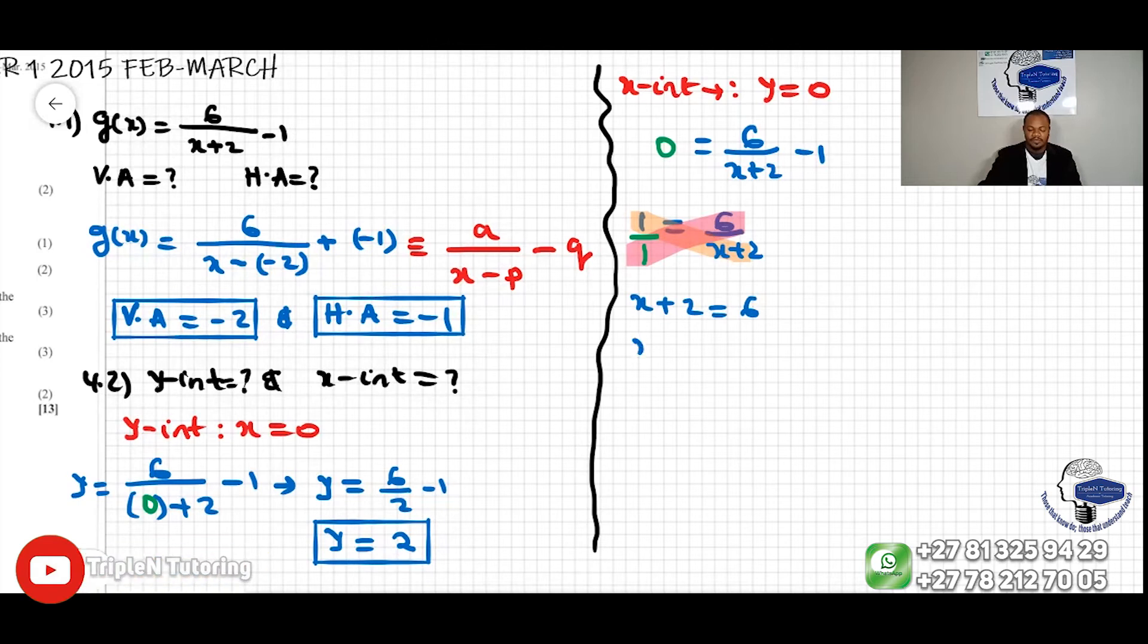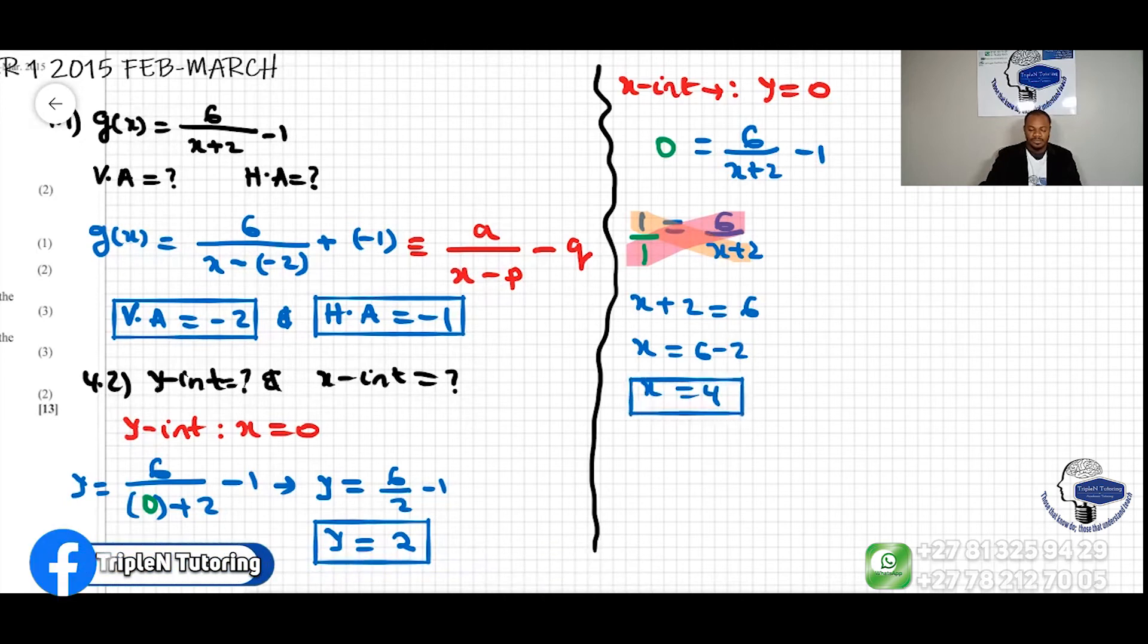This makes, if you move the positive 2 over, that makes negative 2. And then x is equal to 4. So the x-intercept is equal to 4.